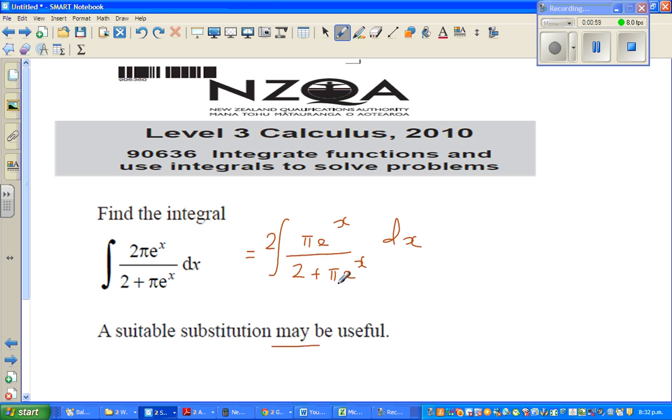As a calculus student, you should see a relation between the denominator and the numerator. A good substitution would generally be the denominator. So let u equal the denominator, which is 2 plus πe^x.